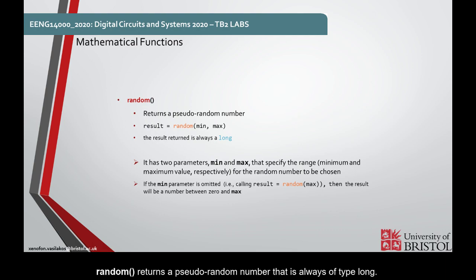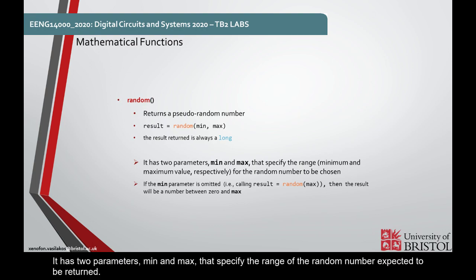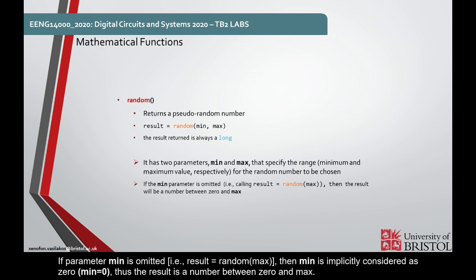random returns a pseudo-random number that is always of type long. It has two parameters, min and max, that specify the range of the random number expected to be returned. If parameter min is omitted, then min is implicitly considered as 0, thus the result is a number between 0 and max.